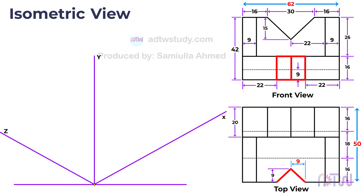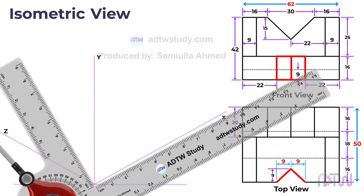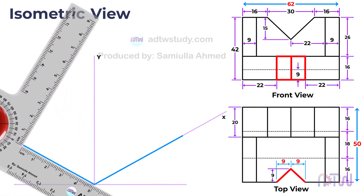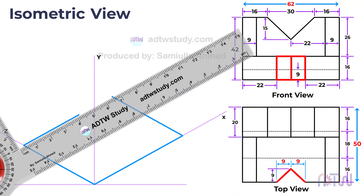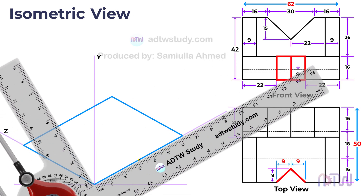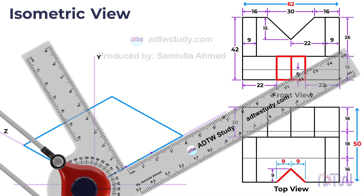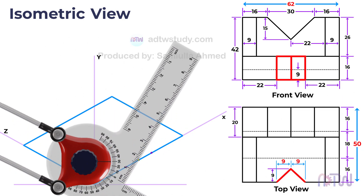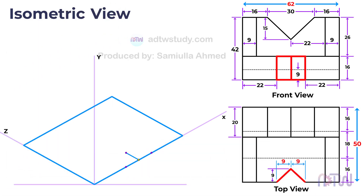Since the notch is centered, the other half width will also be 9 millimeters. Now let's start drawing the base. Use a drafter to create a rectangle with dimensions 62 millimeters in length and 50 millimeters in width. This rectangle forms the outline of the base. Now let's add the notch — mark a point exactly in the middle of this side of the rectangle, which will be 31 millimeters from the edge. Next, mark points 9 millimeters away from this middle point on both sides. To find the depth of the notch, mark a point 9 millimeters from the middle point parallel to the z-axis. Join the three points to complete the outline of the base with the notch.